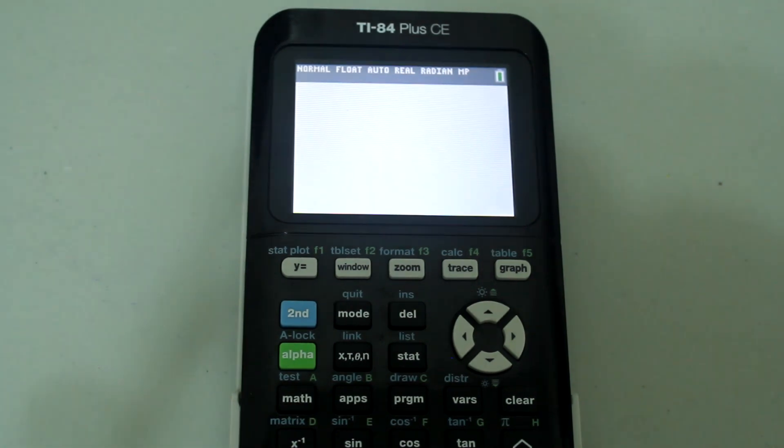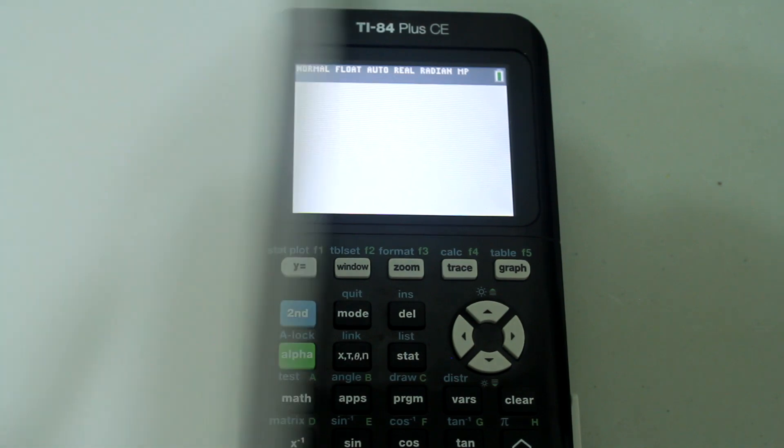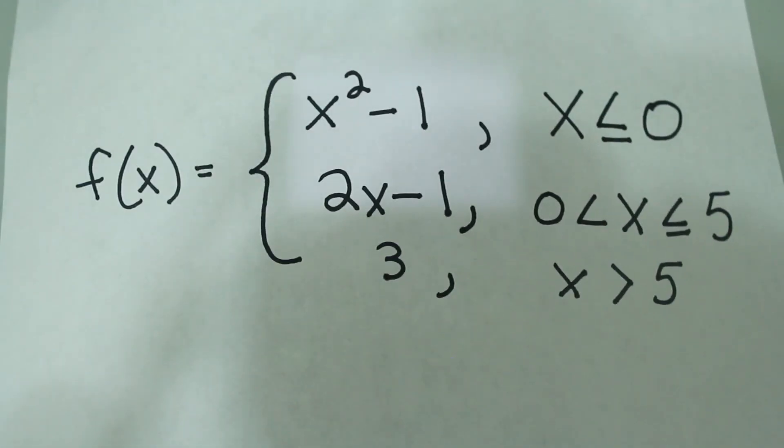The sample piecewise function that I'm going to graph is f(x) = x² - 1 when x ≤ 0, f(x) = 2x - 1 when 0 < x ≤ 5, and f(x) = 3 when x > 5.